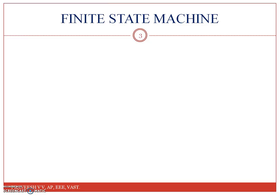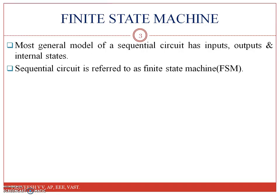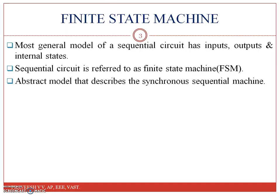Basically, the most general model of a sequential circuit has inputs, outputs, and internal states, as you already know. A sequential circuit is referred to as a finite state machine, or simply FSM. A finite state machine is an abstract model that describes the synchronous sequential machine.